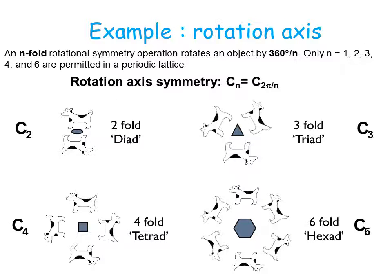An important symmetry operation is the rotation axis. An n-fold rotation symmetry operation is defined as a rotation of 2π/n. In a crystal — a periodic lattice — only n equal to 1, 2, 3, 4, and 6 are allowed. These are denoted Cn, where Cn means a rotation of 2π/n. C2 is symbolized by an ellipse, C3 by a triangle, C4 by a square, and C6 by a hexagon, representing two-, three-, four-, and six-fold rotation axes respectively.